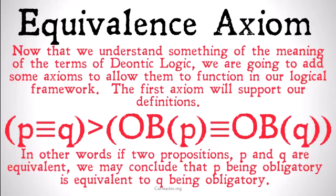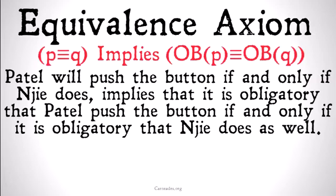Hopefully this makes some intuitive sense, but let's look at an example. Patel will push the button if and only if Njai does — this implies that it is obligatory that Patel push the button if and only if it is obligatory that Njai does as well. So if these two people will only do these things if the other one does, and it is obligatory that one of them does it, it must be obligatory that the other one does it as well, and vice versa.